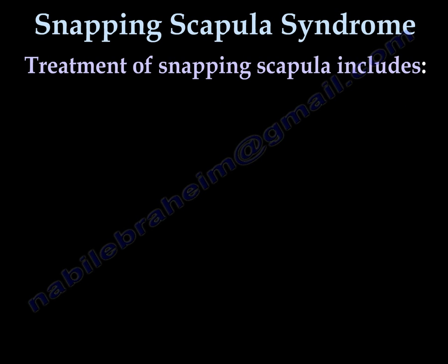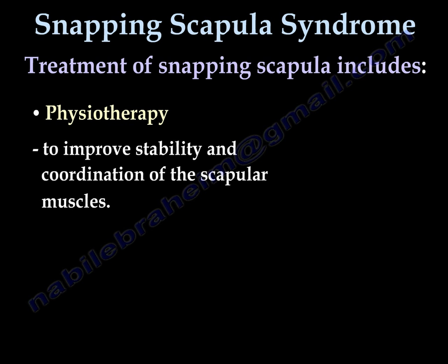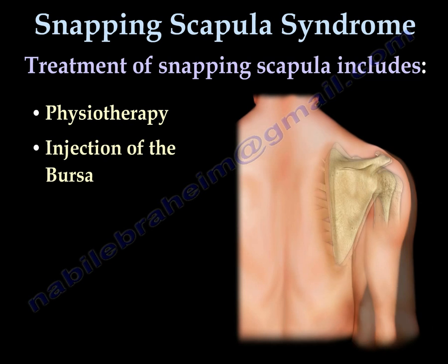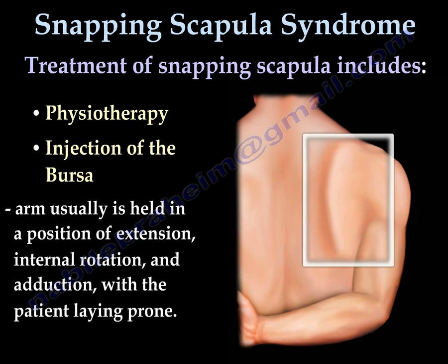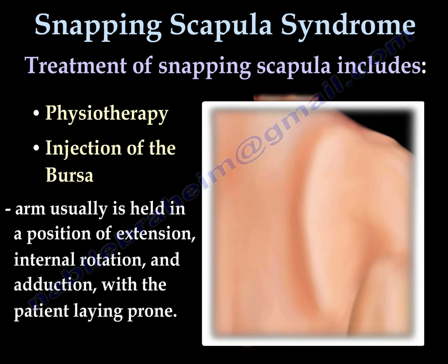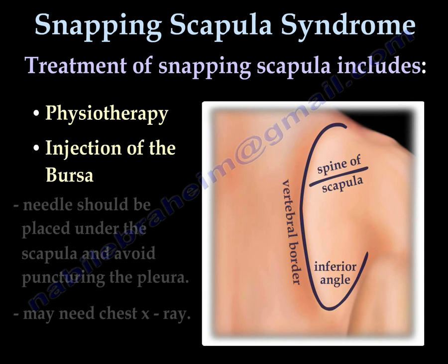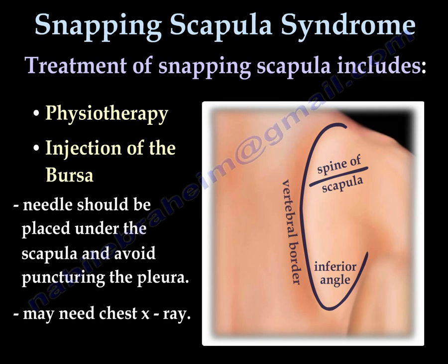Treatment of snapping scapula includes physiotherapy to improve the stability and coordination of the scapular muscles, and injection of the bursa. The arm is usually held in a position of extension, internal rotation, and adduction, with the patient lying prone or sometimes standing, which makes the scapula more prominent. The needle should be placed under the scapula to inject into the bursa. Please avoid puncturing the pleura — you may need a chest x-ray after that injection.